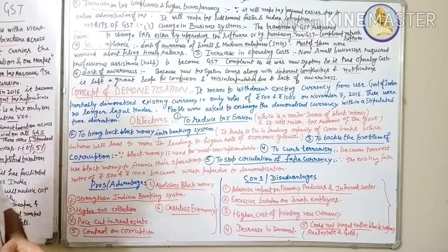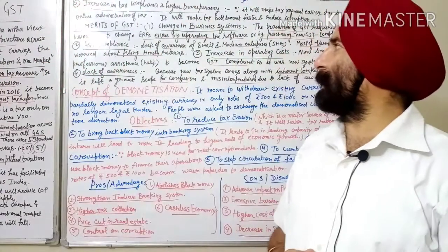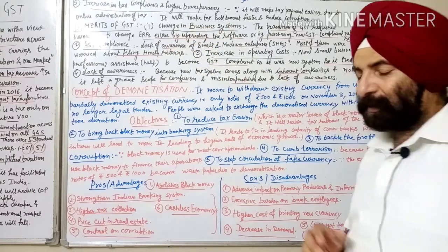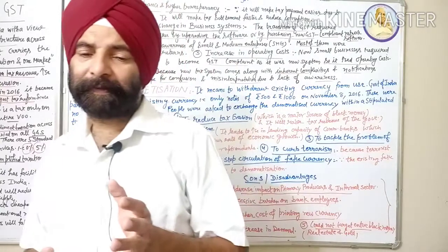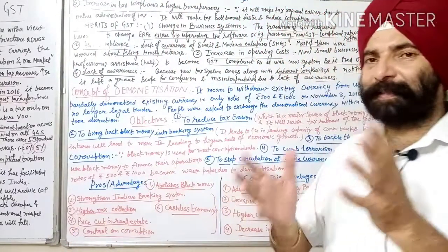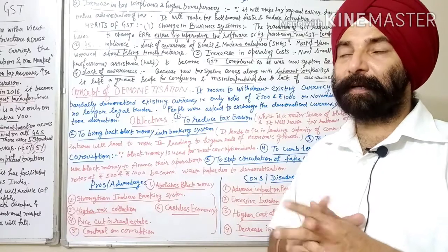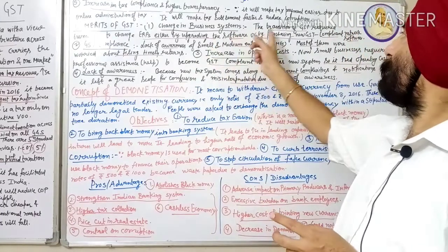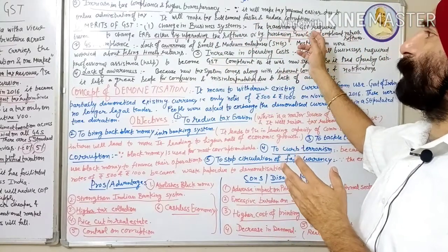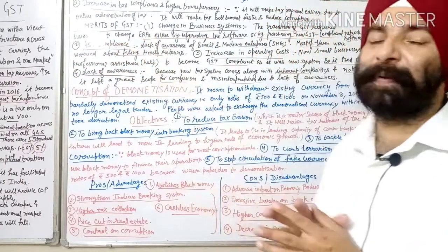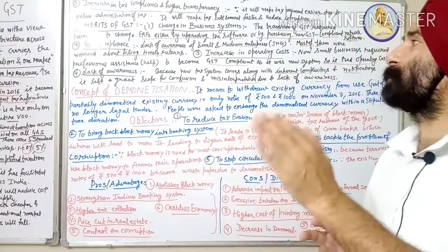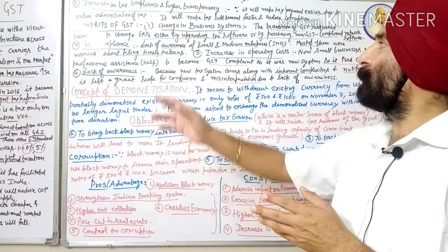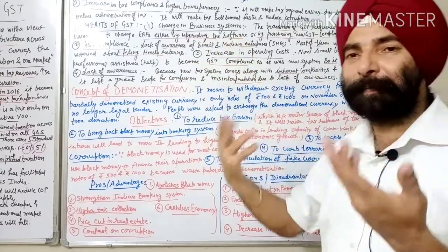Now for the demerits of GST. The first demerit is a change in the business system. Whenever an enterprise pays tax, there was already an existing system for paying indirect taxes. But now the entire system changed. The transition to GST required all businesses to change their ERPs — Enterprise Resource Planning systems used under the old taxation system — requiring them to upgrade their software.